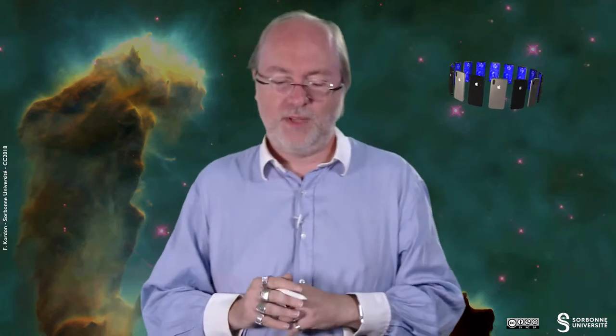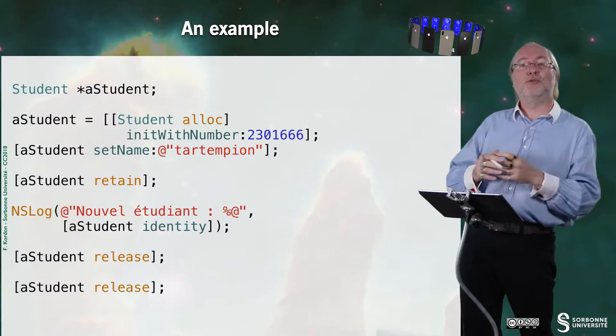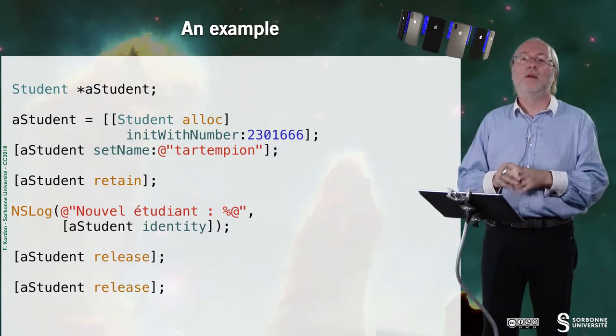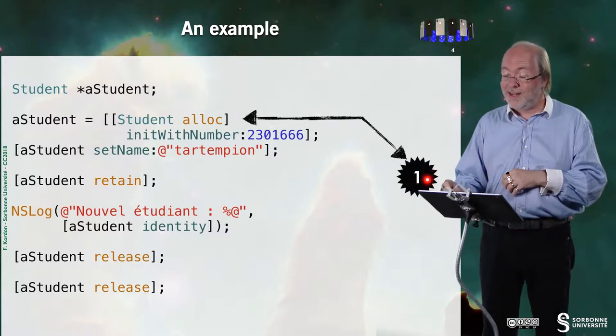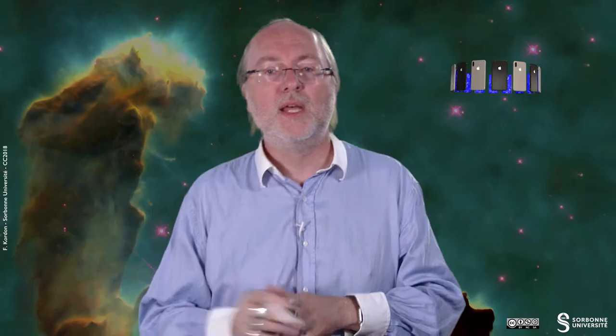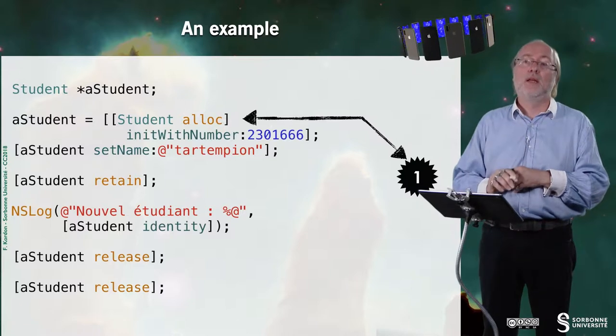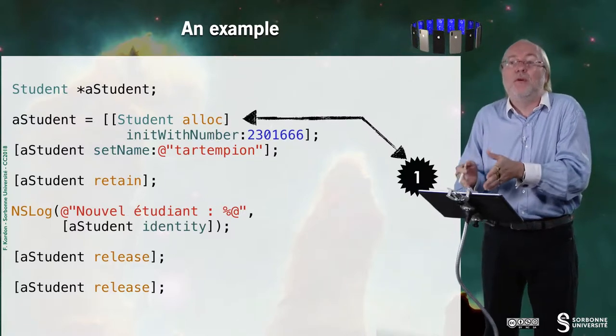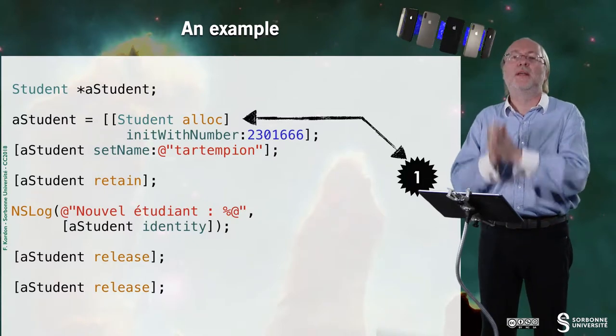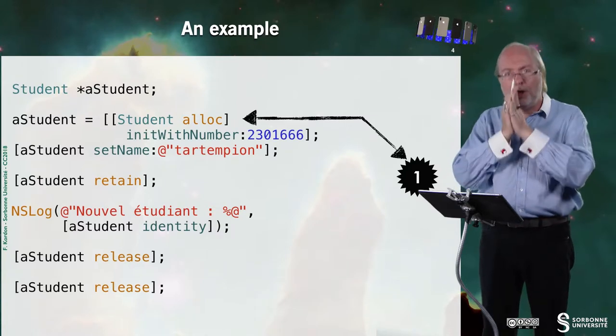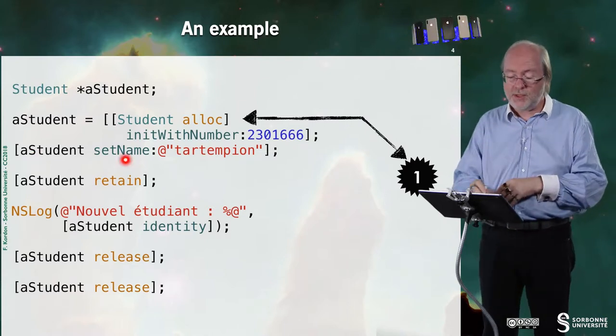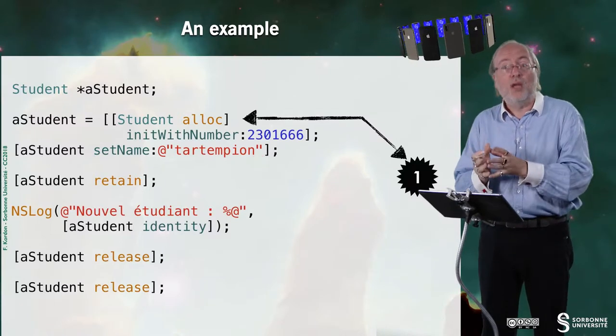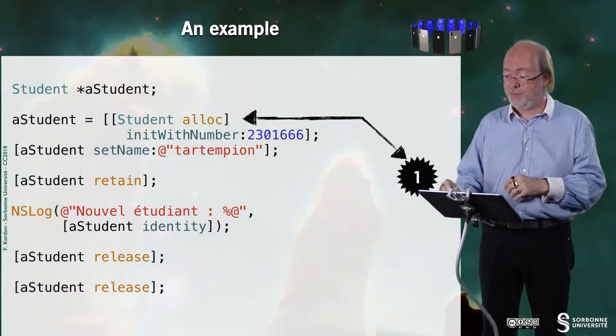Let's have a small example. Here, I have a variable that is a reference to a student. And I allocate this variable by doing student alloc init with number. And as soon as I do it, the counter of the student is set to one. It's set to one because I have here alloc. And also, I know that behind this init with number, there is a call to the main init. So based on this instruction, I'm sure that after I execute this line, I have a reference to a student of class student that has a reference counter set to one. Here, this instruction doesn't change anything to the counter. It does change the state of the object, but not the counter.